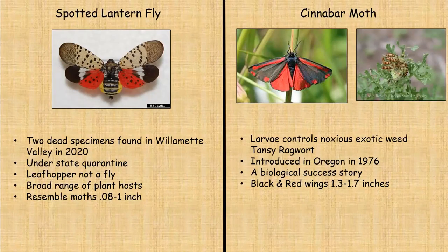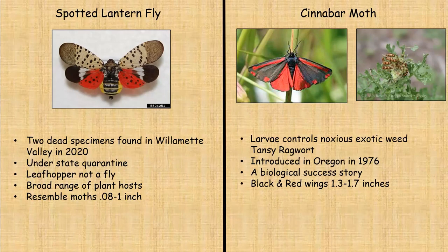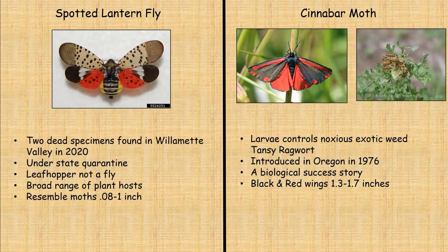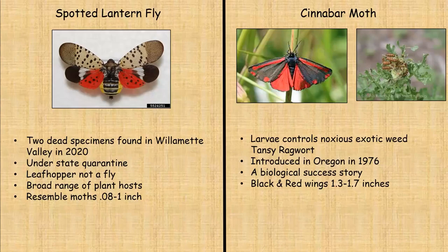Another worrisome pest is the spotted lanternfly. Two specimens were found dead in the Willamette Valley in 2022, putting everyone on alert to be on the lookout for more. They are under a state quarantine to hopefully prevent them from becoming established here. This is a leafhopper — not a fly — it looks like a moth but actually sucks the juices out of plants. It has a broad range of hosts and is a little less than an inch long.